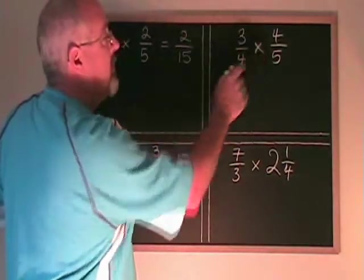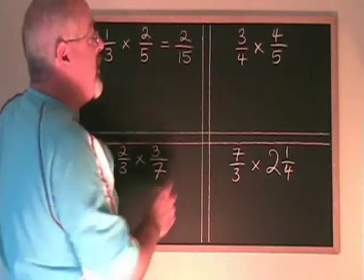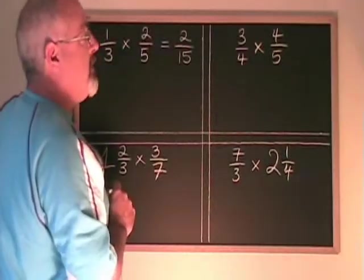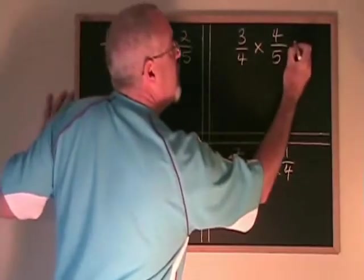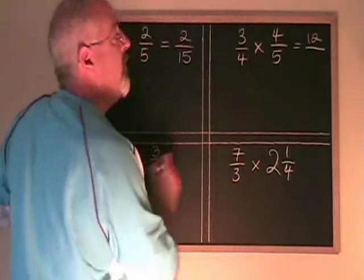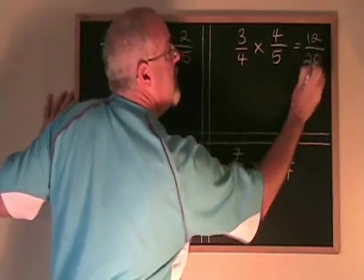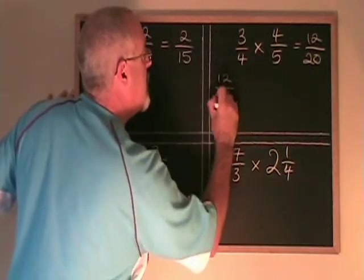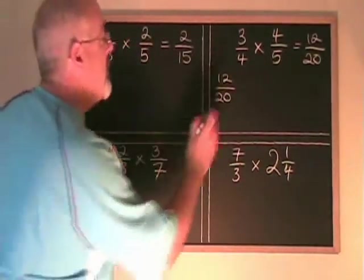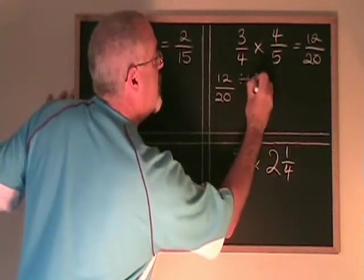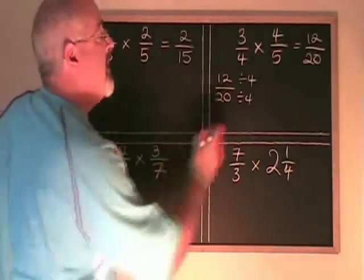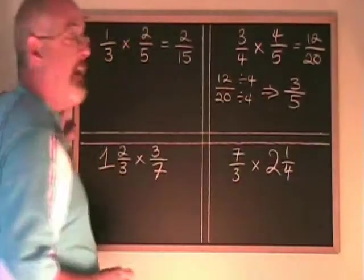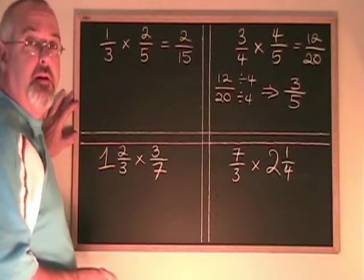Here we have 3 quarters times 4 fifths. We could do cancelling, but that's not what this video is about, so I'm just going to multiply these fractions directly. 3 times 4 is 12, and 4 times 5 is 20. We have 12 twentieths. This fraction can be reduced because 12 and 20 have a common factor of 4. If we divide both the top and the bottom by 4, we get 3 fifths. That cannot be reduced further — that is our final answer.